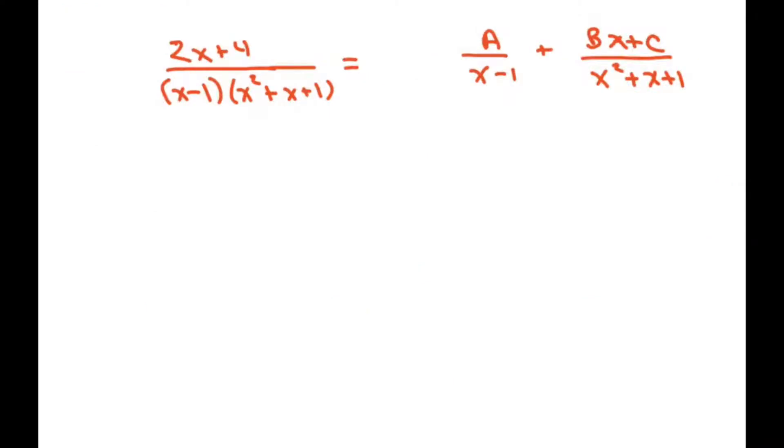So when we get started, when we expand this, we're going to write this as a over x minus 1, that's the linear, and then we're going to say plus bx plus c here over our quadratic, because we want these both to be proper rationals.